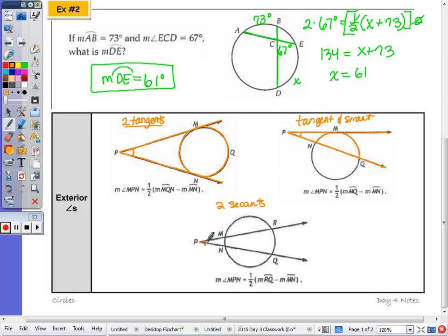When I look at angle P, that intercepts these two arcs. Whenever I'm trying to find an exterior angle, the angle is outside of the circle versus inside, so we have to subtract. It's half the difference of the two arcs, not half the sum.